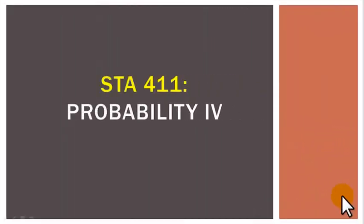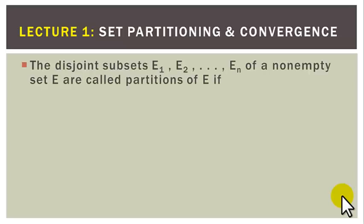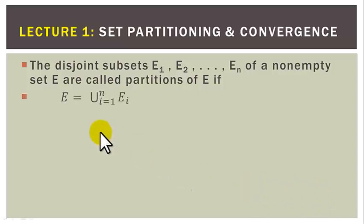Lecture Series on STA-411 Probability 4, Lecture 1: Set Partitioning and Convergence. The disjoint subsets E1, E2 to EN of a non-empty set E are called partitions of E if E is equal to the union of Ei as i goes from 1 to N.